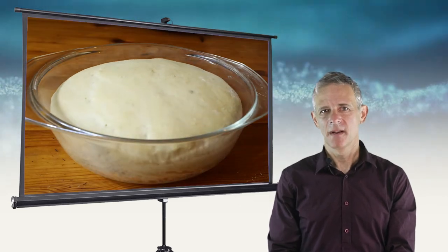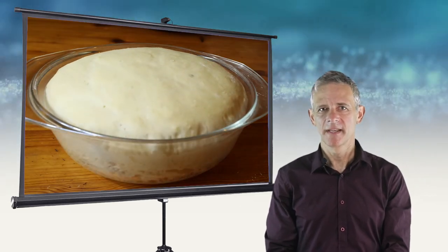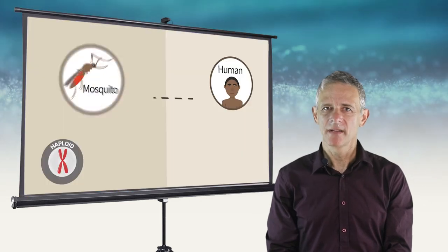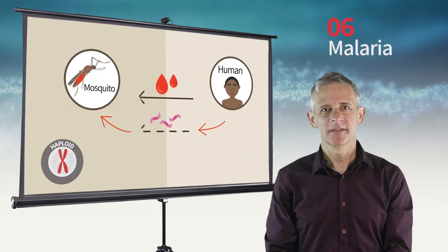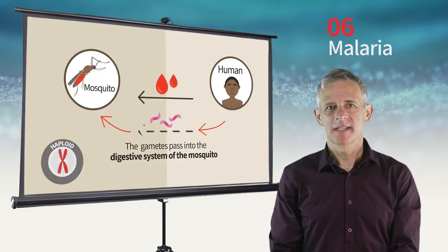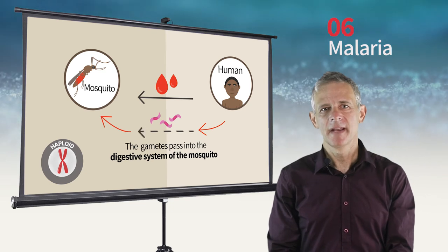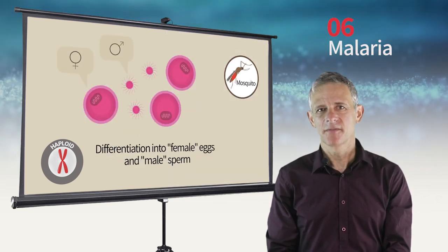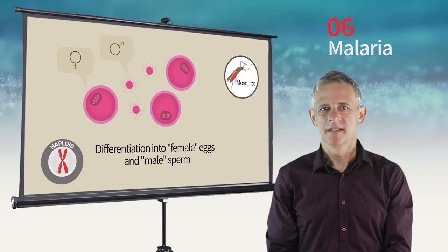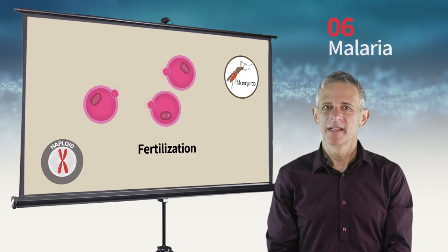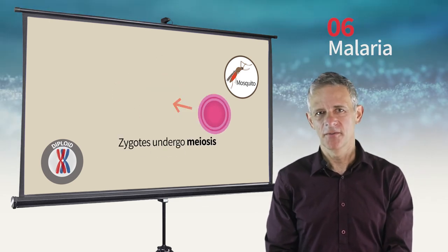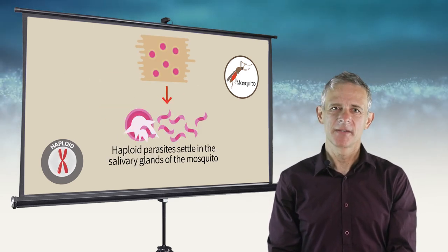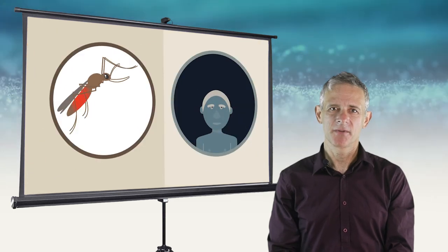In some unicellular organisms, like yeast, the gametes are very similar. However, in other such organisms, like the malaria parasite, gametes are different and slightly resemble male and female gametes. We will therefore conclude this chapter with the malaria parasite and tell you how we got sick with malaria in Africa and how this malaria parasite reproduces sexually.